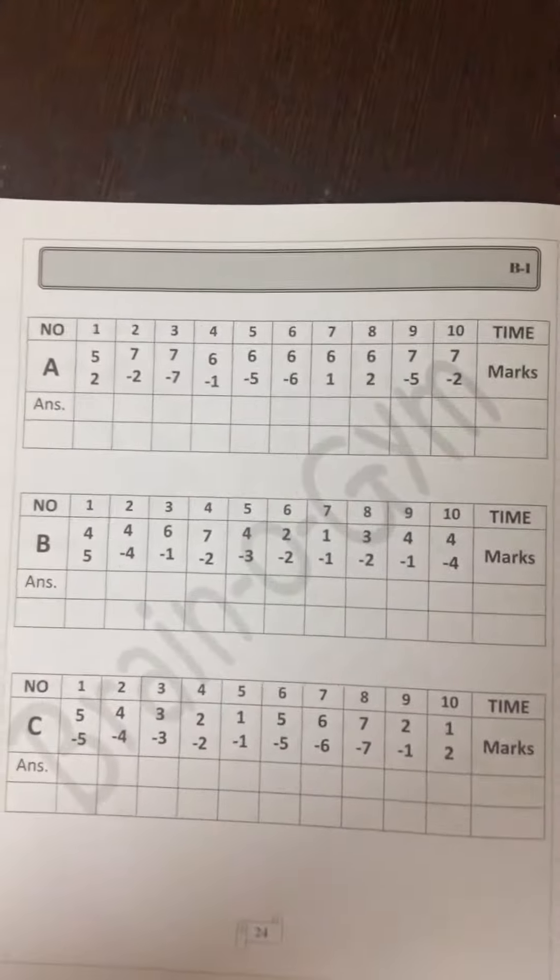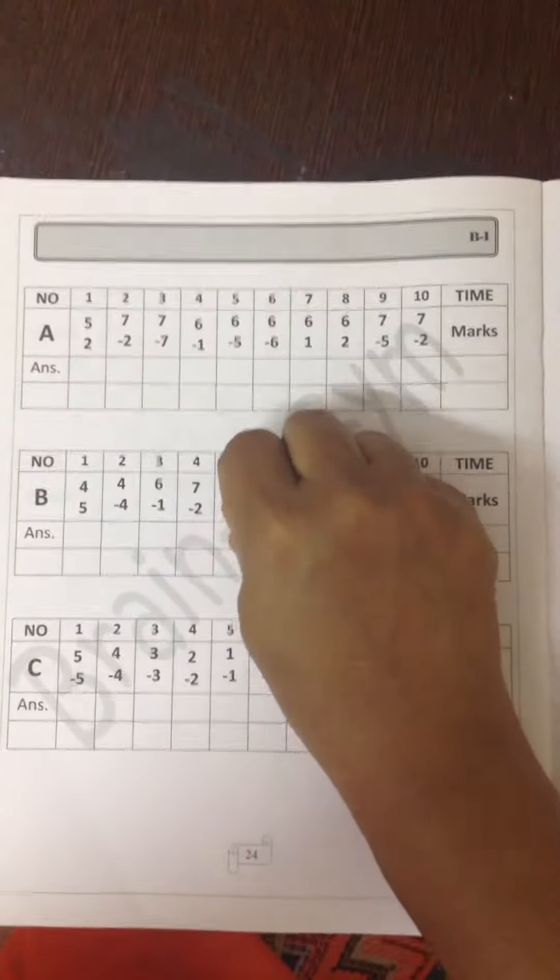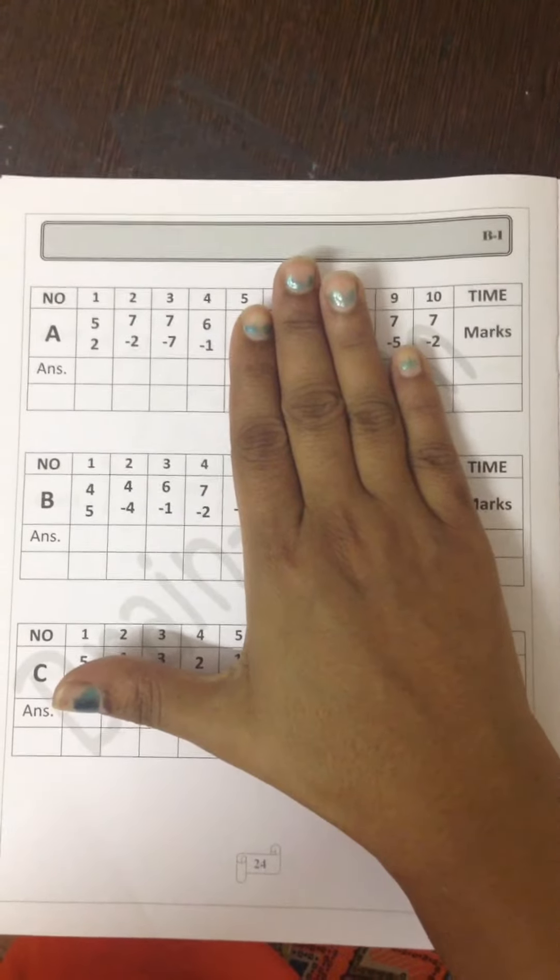Now some questions using the finger method. 4 plus 5. That is 9.